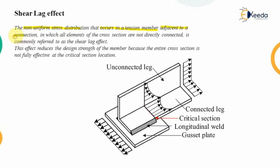Wherever there is a connection, only that position will be experiencing the shear lag effect. At the connection, if all the elements of the cross section are not directly connected — that is, some parts are connected while some parts are unconnected — we will have one connected leg while the other leg is the outstanding leg. This effect is known as the shear lag effect.